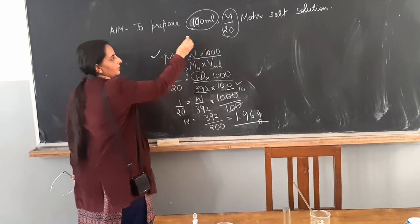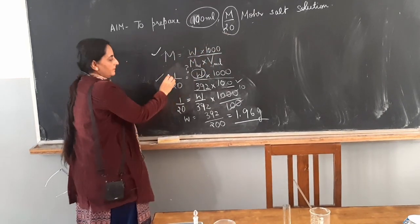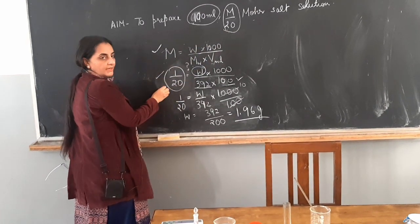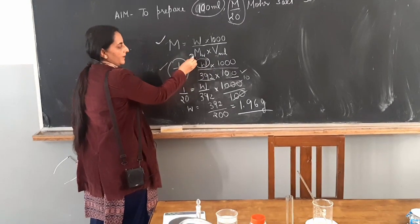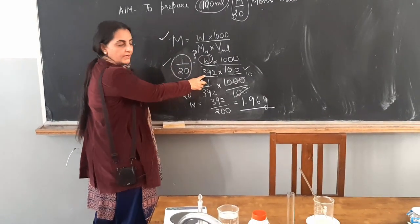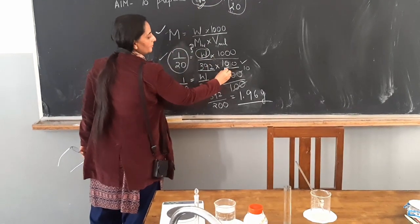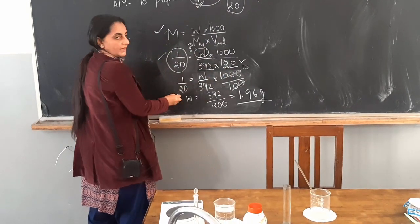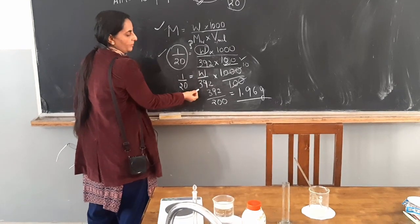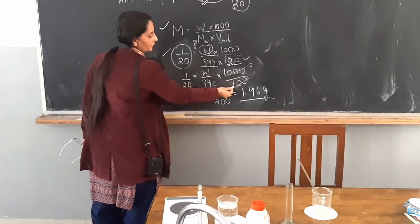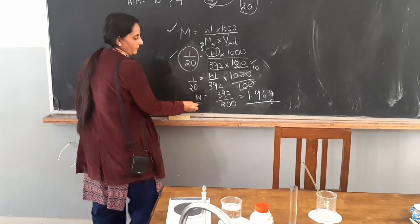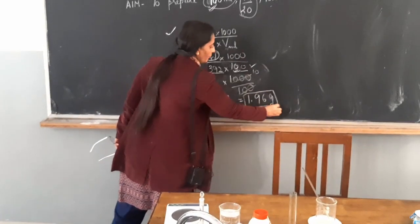So I am substituting 1 by 20 for molarity. Weight is to be calculated. Molecular mass is 392, and 100 ml is the volume that we need to prepare. So 1 by 20 equals W by 392 into 1000 by 100. When I solve, I get the value as 1.96 grams.